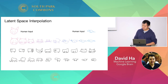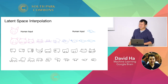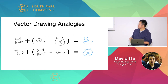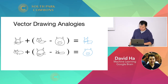We can also interpolate between trucks or buses and cats to get a cat-bus, and between pigs and elephants. For those familiar with word2vec, we can do sketch2vec — we can take away the body of a pig and add a body to a cat using vector arithmetic.